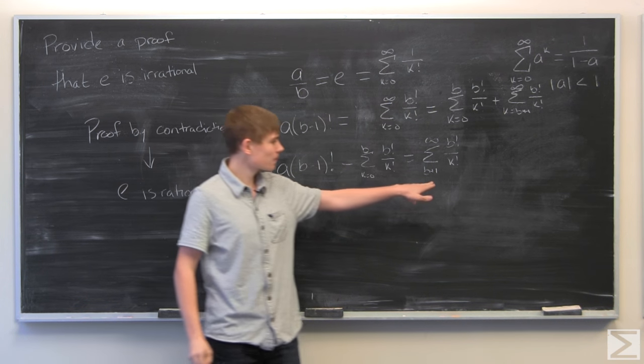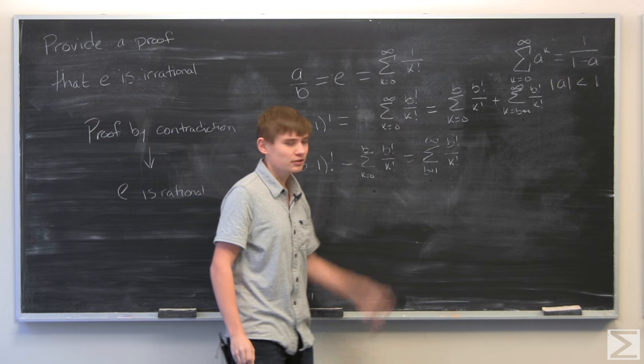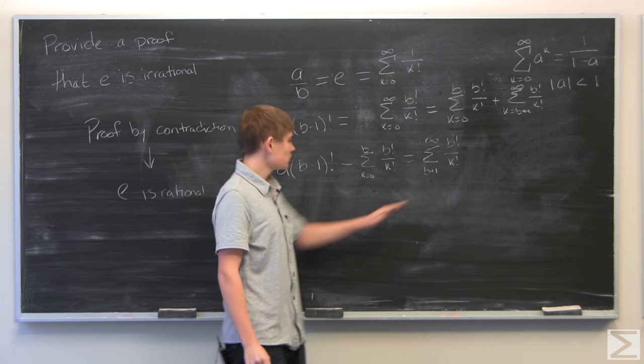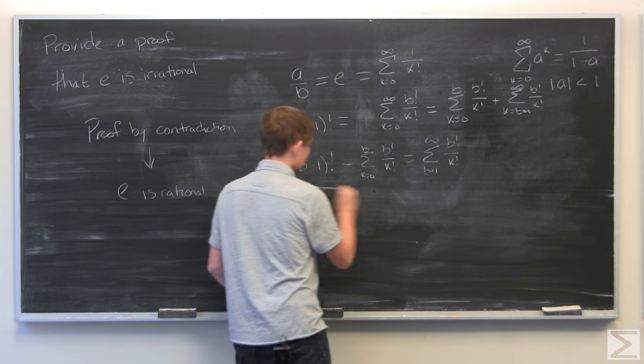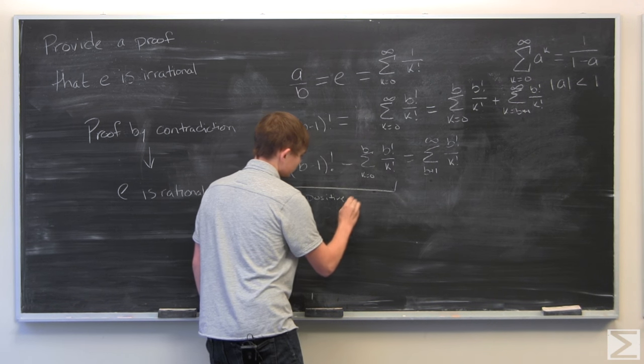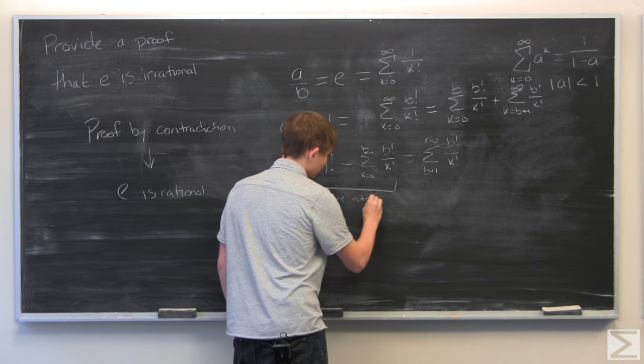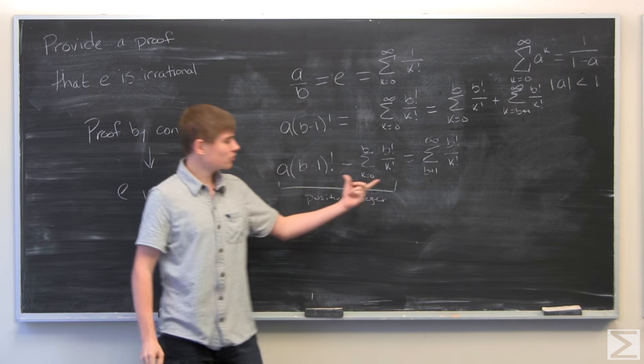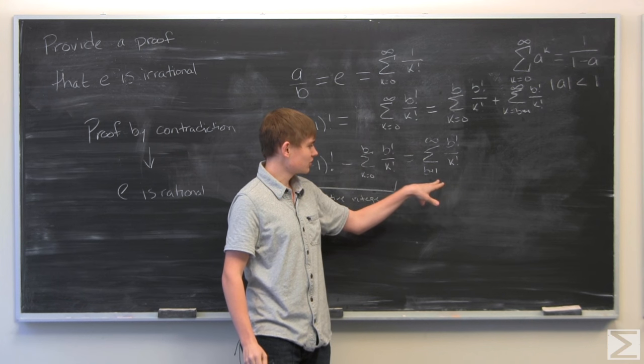Which means that this is going to be an integer is equal to what's left of the infinite sum, which is from B plus 1 to infinity. And since this is going to be greater than 0, we know that this is going to be a positive integer. And therefore, for this equality to hold, this is going to have to be a positive integer.